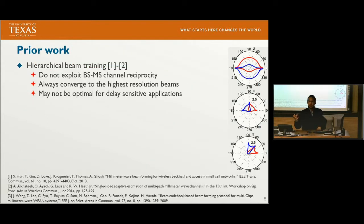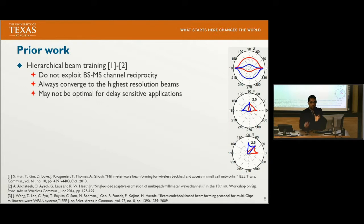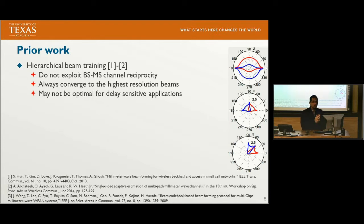To reduce this training overhead, prior work has focused on hierarchical beam training. In hierarchical beam training, beam training is performed in several stages. In every stage, we have a sector — as we see here, we have a red sector and blue — and beam training is performed only on those sectors. After every stage, the sector that results in the highest SNR is further investigated in the following stage, and so on. This technique has been shown to reduce the training overhead when compared to exhaustive search techniques.